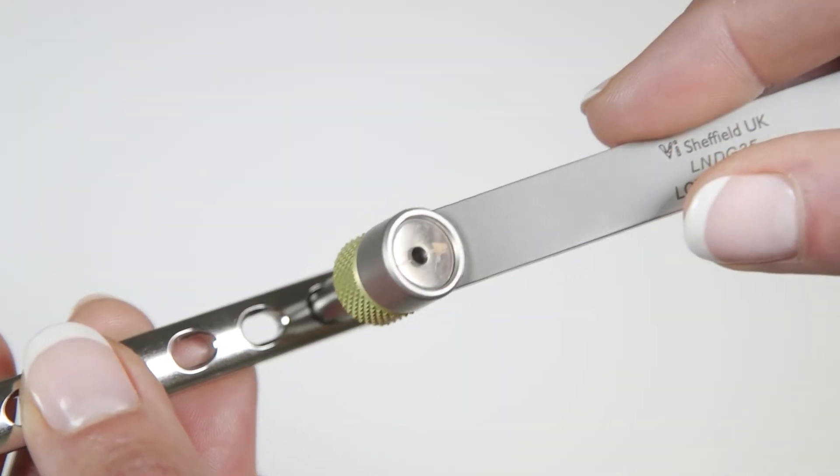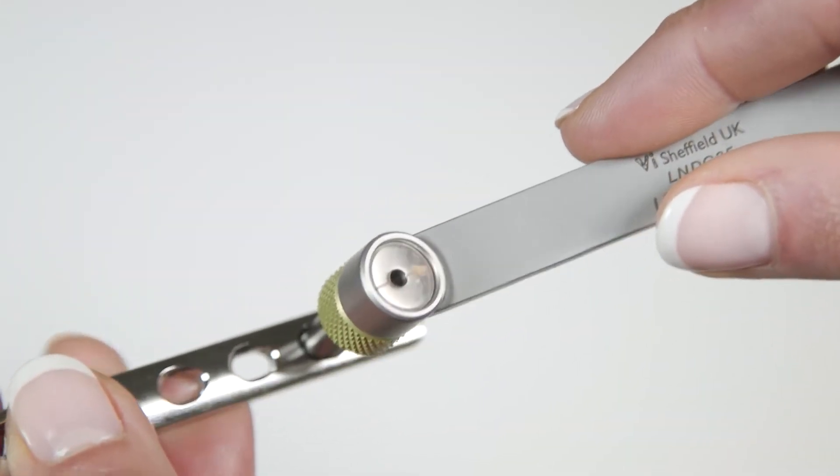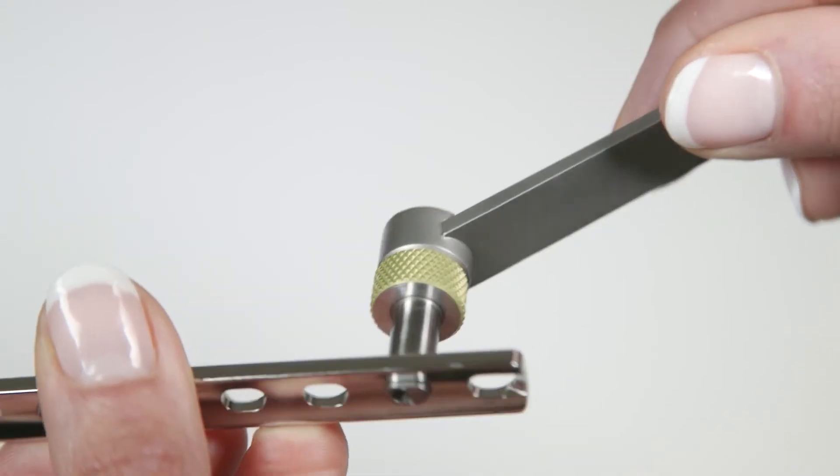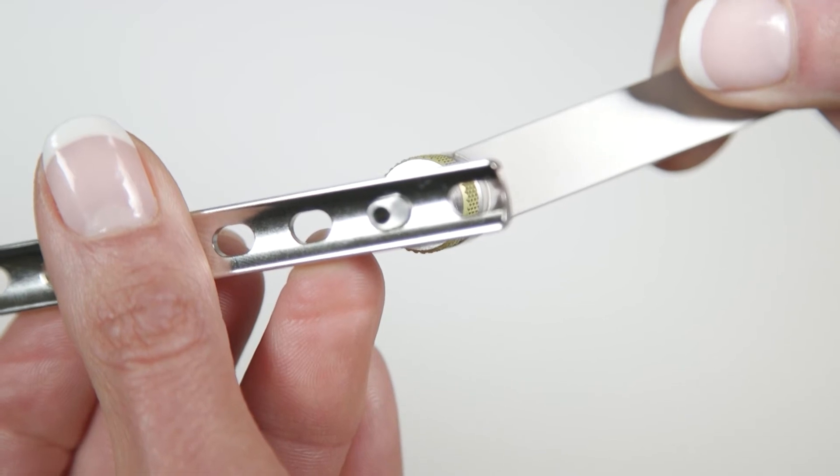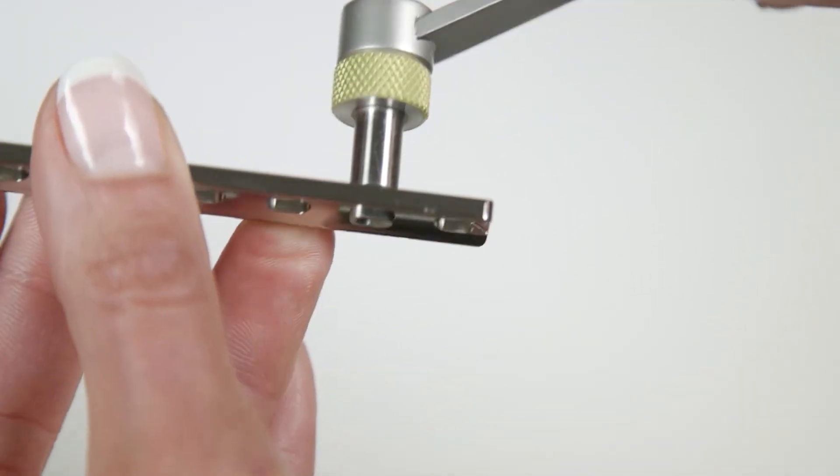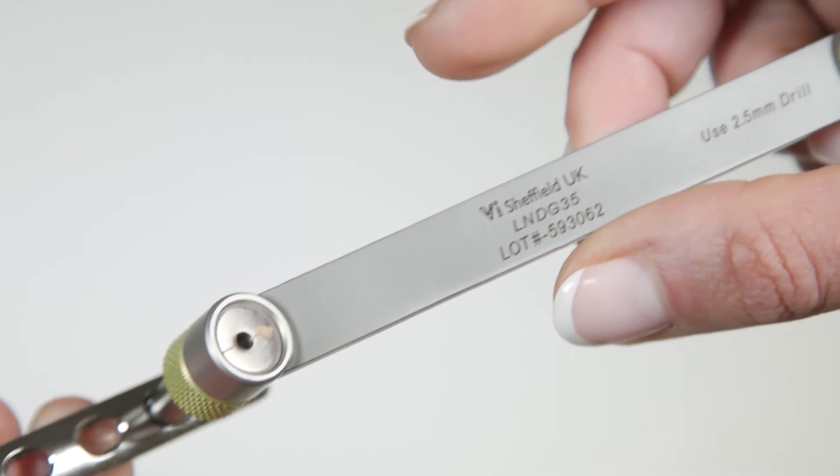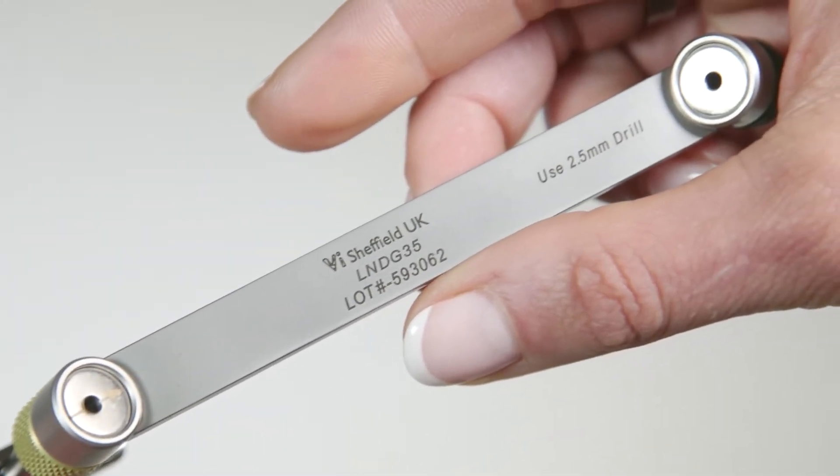The Load Neutral Drill Guide is used with the Dynamic Compression Plate. The device is size specific because the tips of the device must fit snugly into the oval holes of the plate. The VI device is etched with the correct size pilot drill.